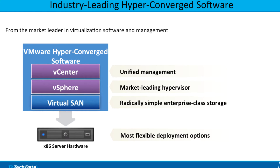So, how is VMware approaching HCI? VMware's hyperconverged software is composed of three differentiating and best-in-class solutions: vSphere, the hypervisor that defines the industry standard; vCenter Server, a unified and extensible management solution; and Virtual SAN, a radically simple enterprise-class storage solution that is uniquely embedded in the hypervisor. This hyperconverged software is available through the broadest set of deployment options, from turnkey appliances to over 100 pre-configured, pre-certified servers through the Virtual SAN ReadyNode program. VMware is the only vendor who provides this level of integration.